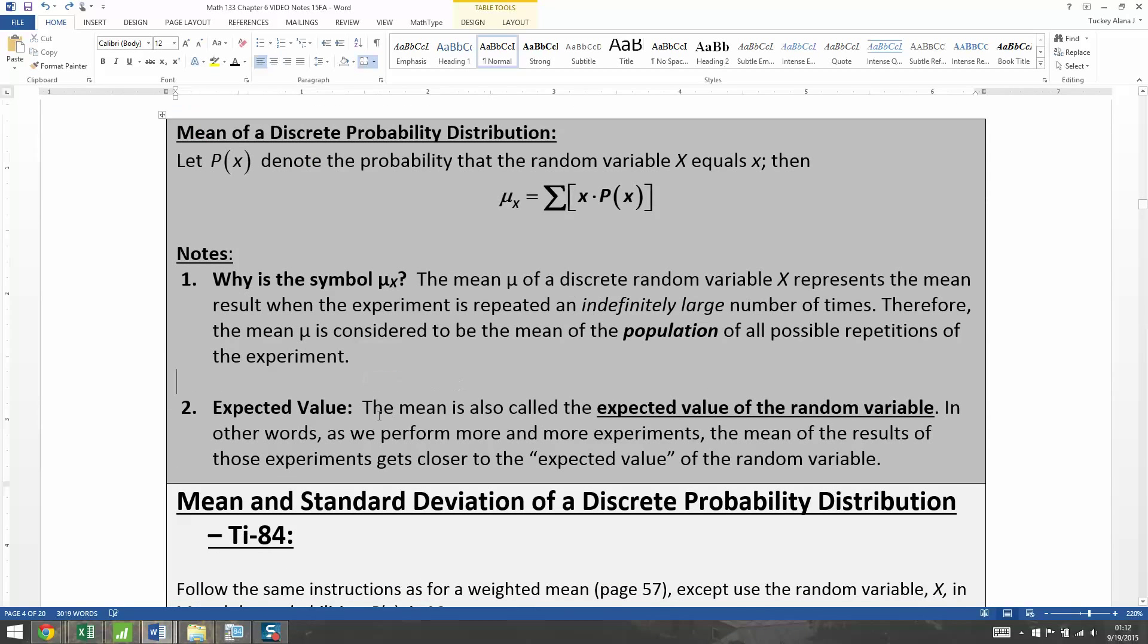Now the other issue is the mean is also called the expected value of the random variable. And I cannot stress how important that is. As we perform more and more experiments, if you did this infinitely many times, the mean of the results of those experiments gets closer and closer to that expected value of the random variable. In other words, the mean, the center, the balance point, is what you expect to happen for that probability experiment. It doesn't mean it's what's going to happen. It's what's expected in the long run.